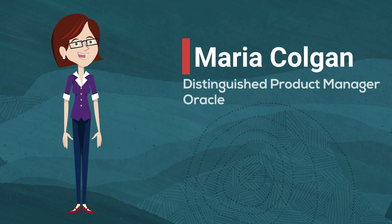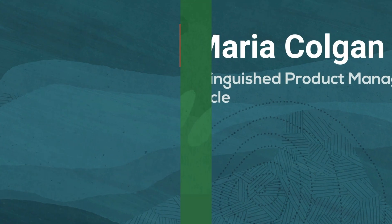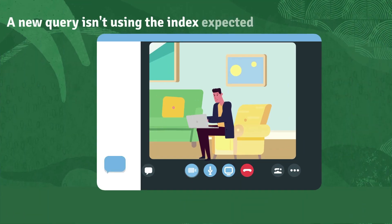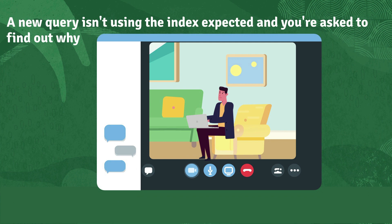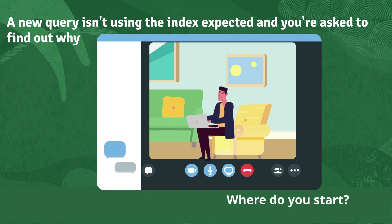Hi, my name is Maria Culgan. I'm a product manager for the Oracle Database, and in this video I'm going to share some SQL tuning tips. Imagine we've got a new query that isn't using the index everybody was expecting it to, and you've been asked to find out why. Where do you start?